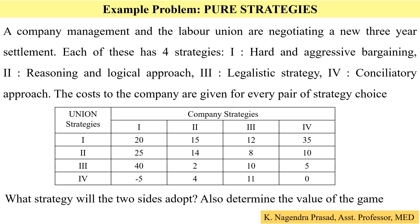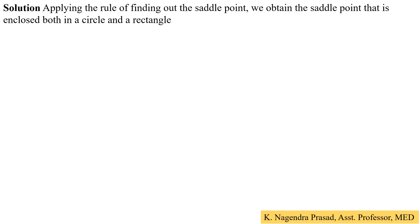The question asks: what strategy will the two sides adopt, and what is the value of the game? To solve this, we apply the rule of finding the saddle point. The saddle point is the element enclosed by both a circle and a rectangle in the payoff matrix.